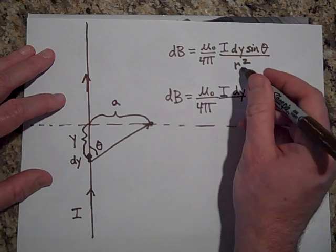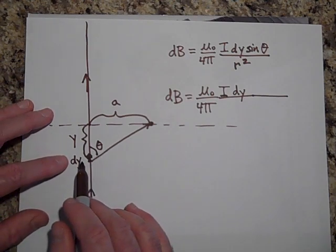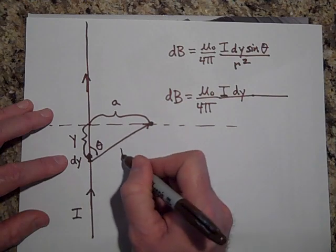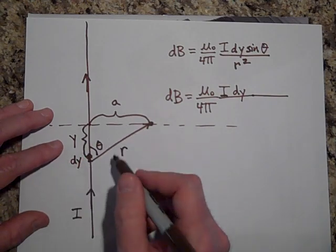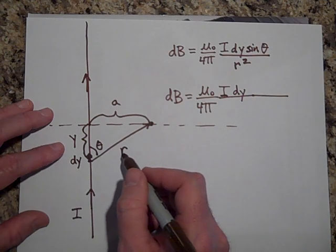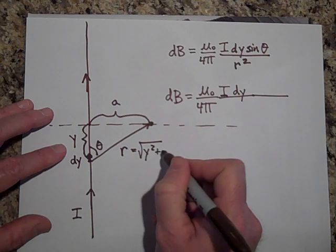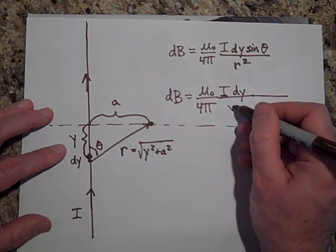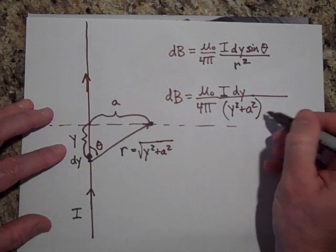But to get R, R squared, if I'd like to get R squared in terms of Y, you see, if this is R, that I can put that in terms of Y with the Pythagorean theorem, it turns out that R is going to be equal to the square root of Y squared plus A squared. And when I square that, I get this. So I just get that.